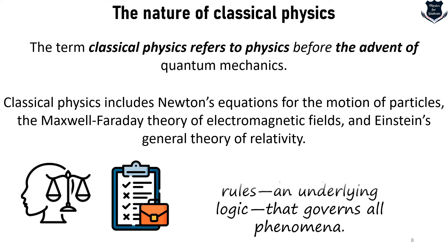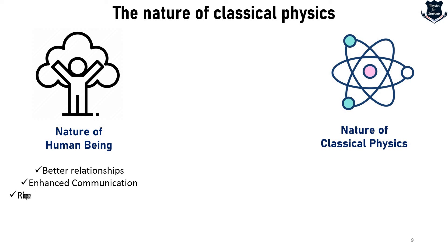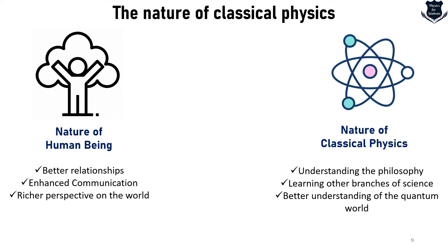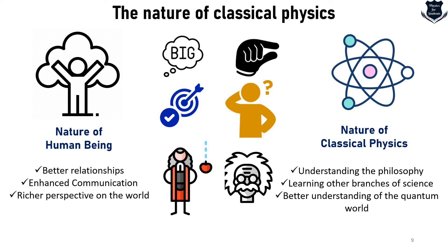Classical physics is a set of principles and rules with an underlying logic that governs all phenomena. Just as studying human nature helps us understand relationships and communication, knowing the nature of classical physics helps us understand the philosophy, learn other branches of science, and better understand both the quantum world and general theory of relativity. The more you know about the big, the better you know about the small; the more you know about deterministic systems, the more you understand uncertainty.